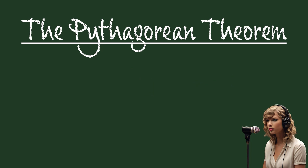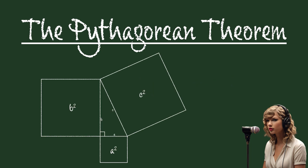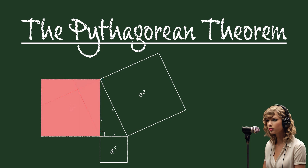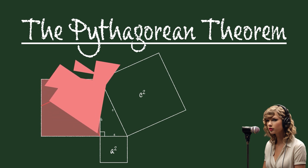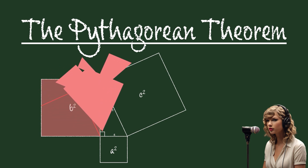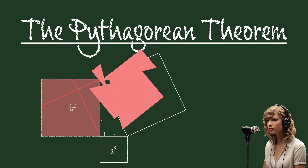First, we will begin with a right triangle with side lengths A, B, and C, such that C is the hypotenuse. Now, take these two line segments with length C and use them to dissect B squared. We can rotate and translate the four resulting polygons so that their right angles match up with the right angles of C squared.